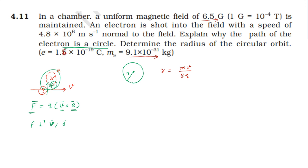Substituting the values: mass of electron 9.1 into 10 power minus 31 kilogram, velocity 4.8 into 10 power 6 meter per second, divided by B magnitude 6.5 into 10 power minus 4 tesla, into Q 1.6 into 10 power minus 19 coulomb. So this is simply 0.042 meter.